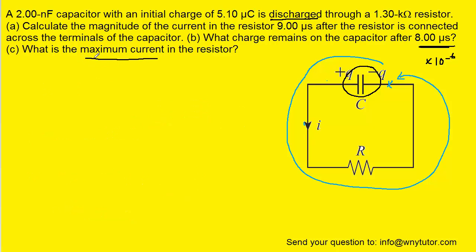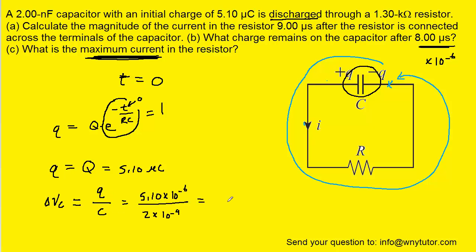Now for part C, it turns out that the maximum current in the resistor is going to occur the moment the capacitor begins to discharge. In other words, when time is equal to zero. That's going to serve as the time at which we get the maximum current. We can see from the discharging capacitor equation that if we substitute zero in for time, that's actually going to cause e to the zero to equal one. So in other words, the charge on the capacitor at this time is equal to the initial charge on the capacitor, which was the 5.1 microcoulombs. That means that the potential change across the capacitor is going to be that charge value divided by the capacitance, which gives us approximately 2550 volts.